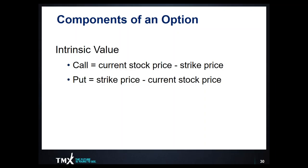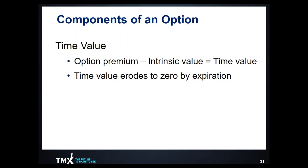Remember, an in-the-money option on expiration is where the automatic exercise rule may come into play. Beyond intrinsic value is time value, because not all options have intrinsic value — there has to be another component making up the premium of the option contract. To determine time value, take the option premium and subtract the intrinsic value. If the option contract has no intrinsic value, it is made up entirely of time value. Importantly, time value erodes to zero by expiration — great for the option writer, but it means the option buyer has a limited time for the stock to move as anticipated.